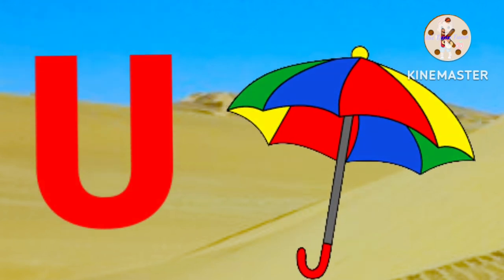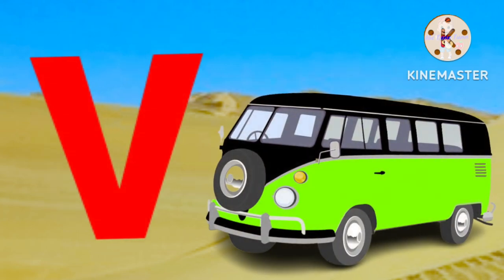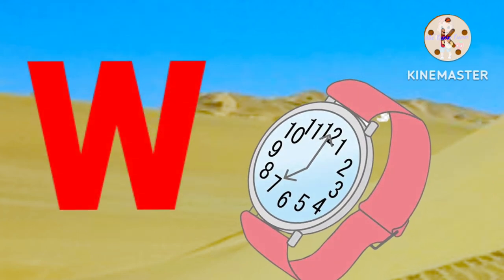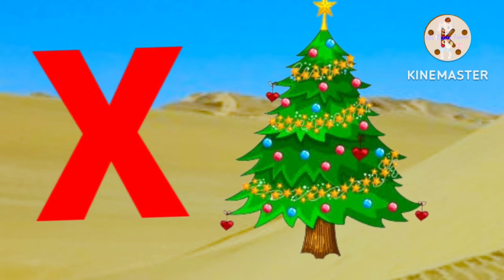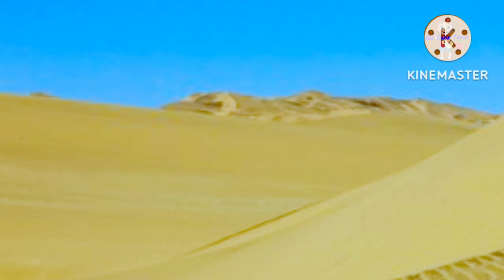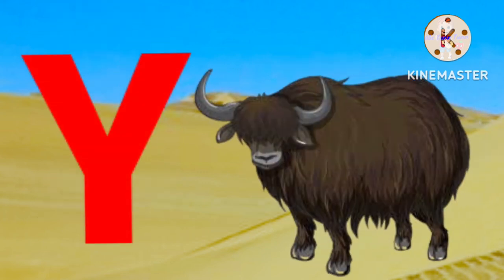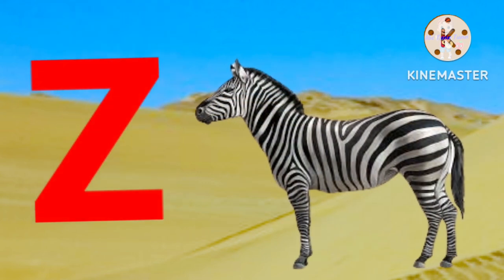U for umbrella, B for lamb, W for watch, X for atmosphere, Y for yak, Z for zebra.